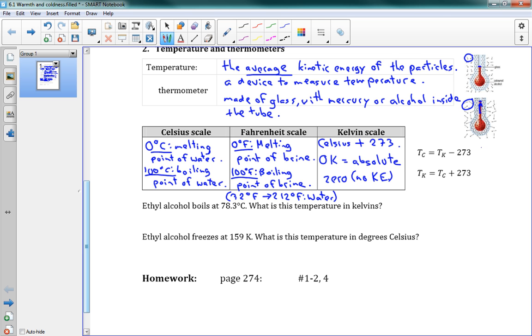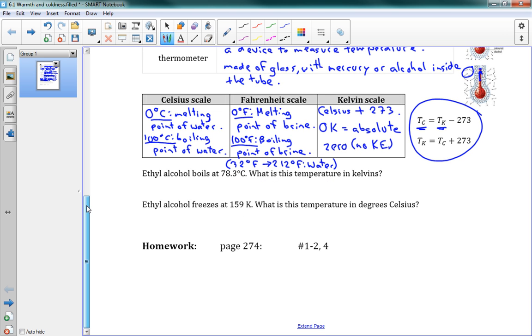Over here to the right, we have two equations. So if you want to get the Celsius temperature from a Kelvin temperature, you use this formula. The temperature in Celsius is equal to the temperature in Kelvin, minus 273. So for instance, if I say right now that it's 283 Kelvin outside, well you could say 283 minus 273, that's 10 degrees Celsius. And the other way around, to get a Kelvin temperature from Celsius, you add 273. We'll use those equations in two little problems here.